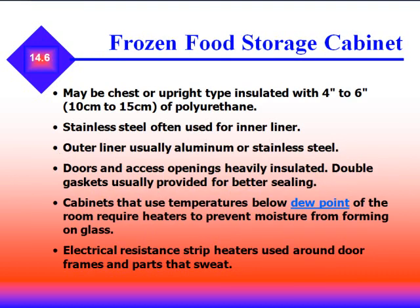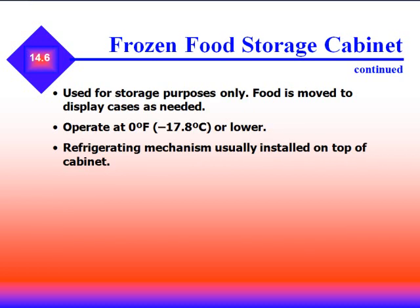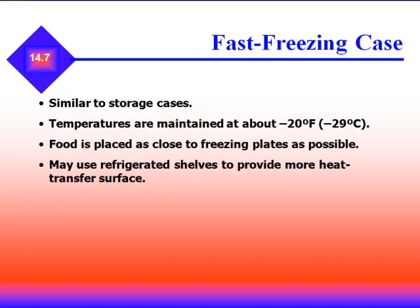The frozen food storage cabinet is frequently seen in grocery stores. It is a chest or upright type insulated with 4 to 6 inches of polyurethane, with stainless steel inner liner and aluminum or stainless steel outer liner. Doors and access openings are heavily insulated with double gaskets for better sealing. Electrical resistance strip heaters are used around door frames to prevent moisture forming on the glass. These cabinets operate at zero degrees or lower, with the refrigerating mechanism usually installed at the top. The fast freezing case maintains temperatures at about negative 20°F and may use refrigerated shelves to provide more heat transfer surface.